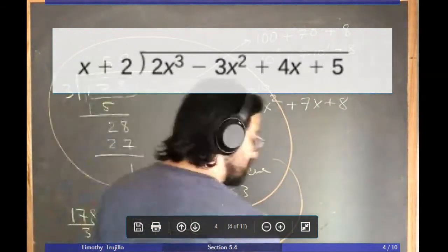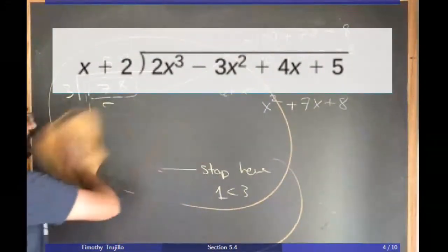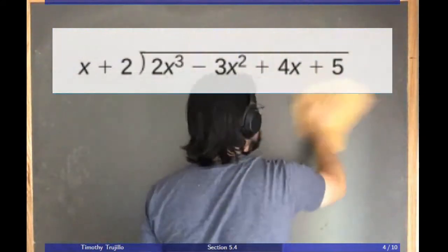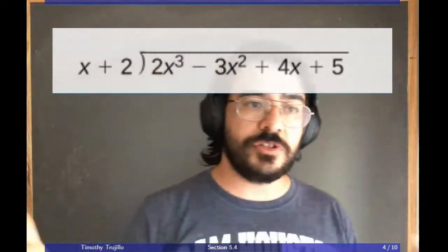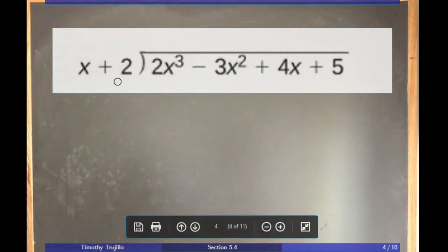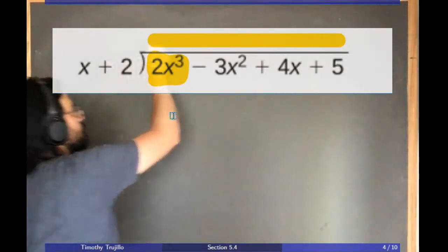Here's a typical polynomial long division example: take 2x³ − 3x² + 4x + 5 and divide it by x+2. The divisor is x+2 and the dividend is 2x³ − 3x² + 4x + 5. I'll work through this slowly so you can see the pattern. We want to find what to put in the quotient to cancel out the leading term.